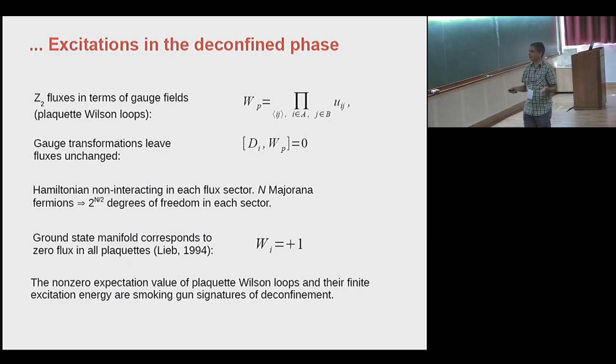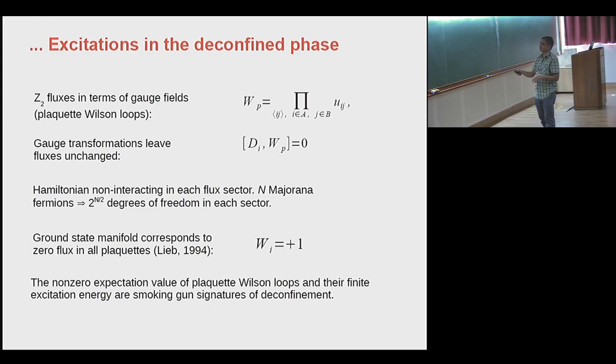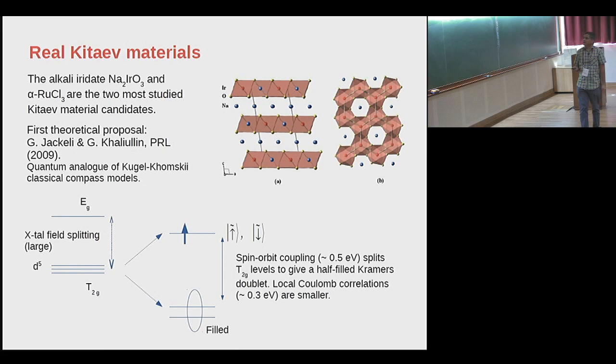These n Majorana fermions correspond to two to the power of n/2 degrees of freedom in each sector. It was shown by Kitaev, based on an earlier argument by Lieb for all bipartite lattices with some reflection symmetry, that the ground state manifold corresponds to zero flux in all plaquettes, i.e., all the W's are one in the ground state. The non-zero expectation value of these plaquette Wilson loops and their finite excitation energy are in fact the smoking gun signatures of deconfined Majoranas.